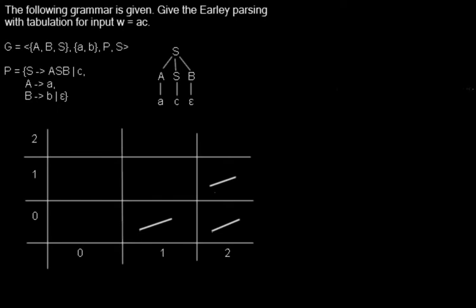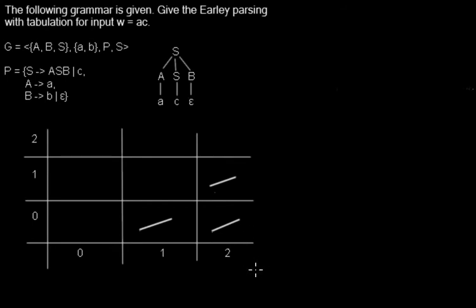Hello, I show you the Earley parsing with tabulation. Here we have a table and the size depends on the input string. In this case the input string consists of two terminals, so the table has a size of 2 times 2.